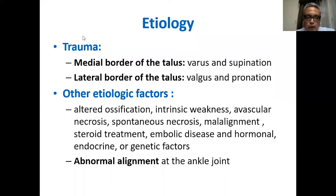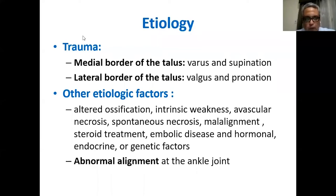The etiology of osteochondral lesions can be traumatic or other causes. Trauma is the most common cause. If you have an osteochondral lesion of the medial border of the talus dome, this is commonly due to a varus or supination injury. If you have it on the lateral border, which is less common, it is due to a valgus or pronation injury.